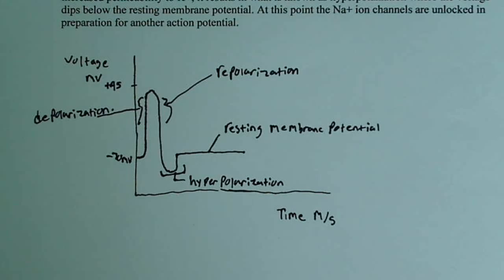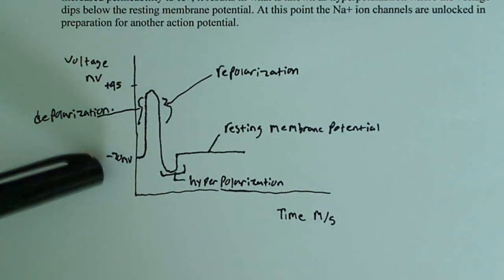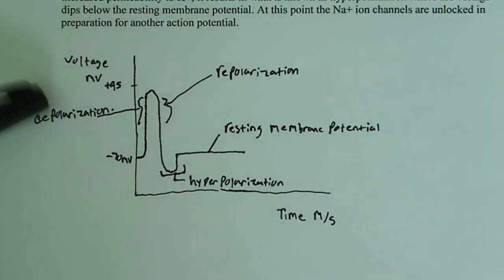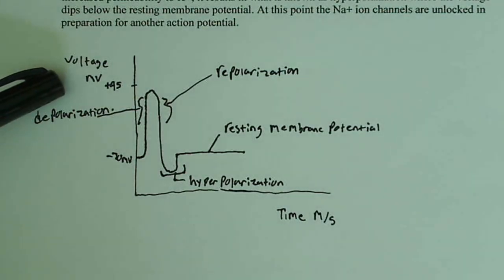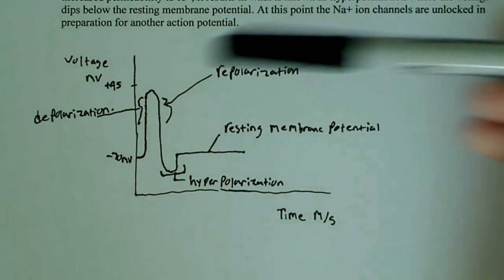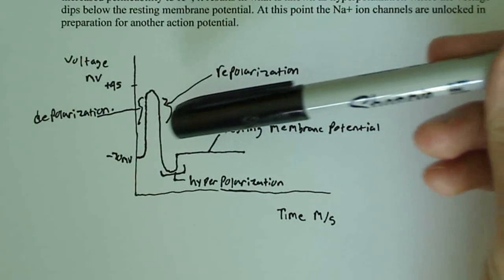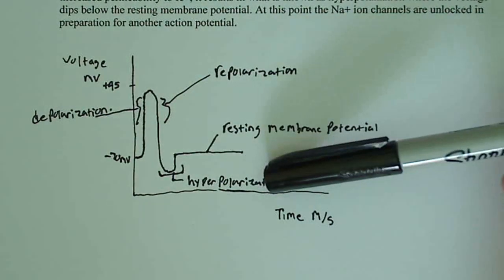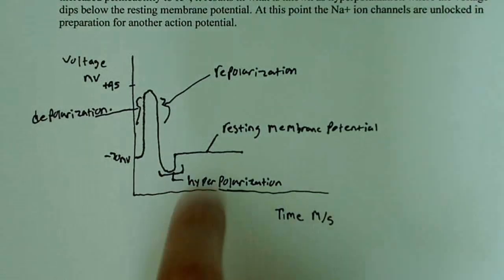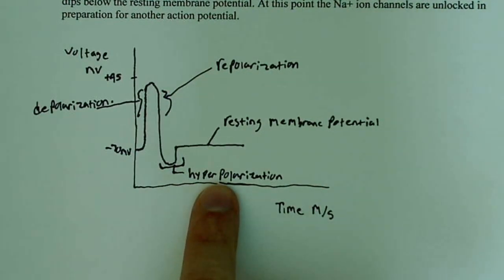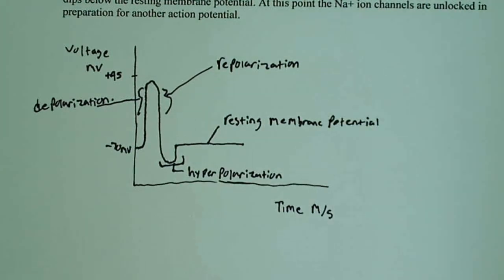Those are the different phases that happen during the process of creating an action potential. You start at resting membrane potential, rapidly depolarize to plus 45 millivolts, reach a peak, rapidly repolarize, dip below resting membrane potential into hyperpolarization, and then return to resting membrane potential until the next action potential occurs.